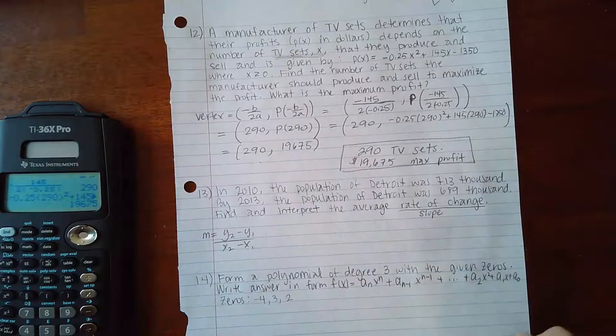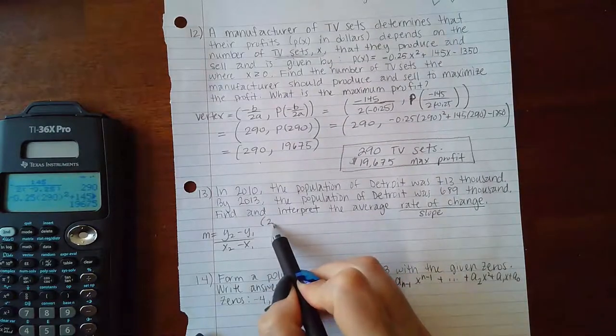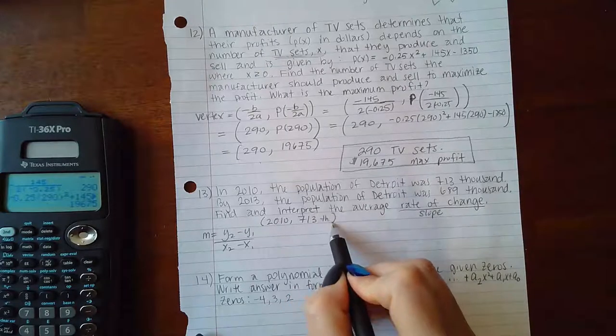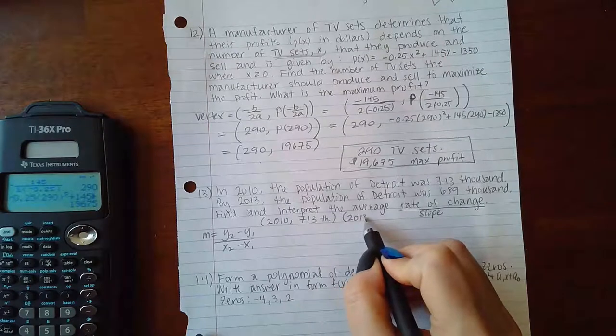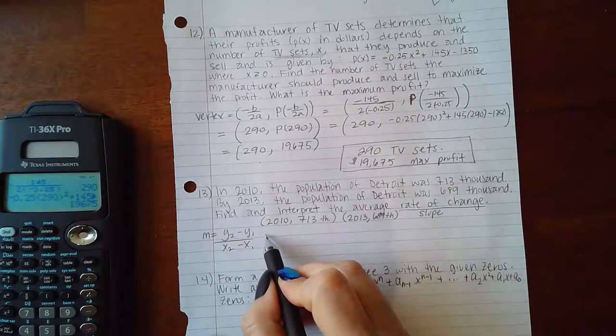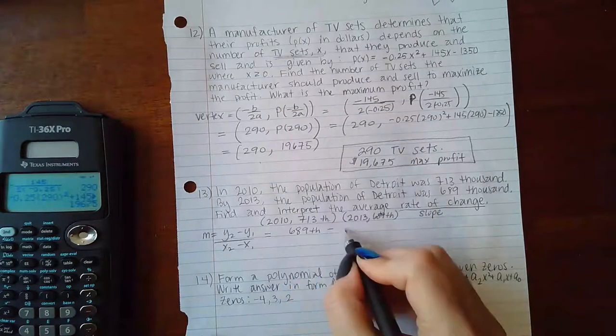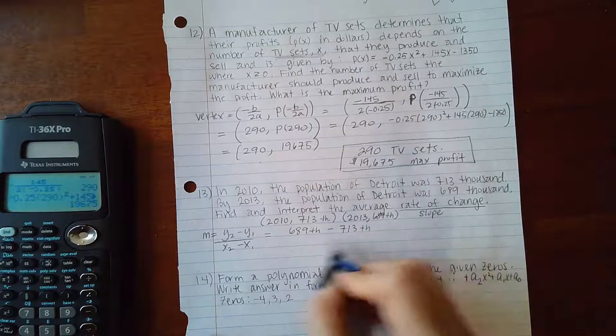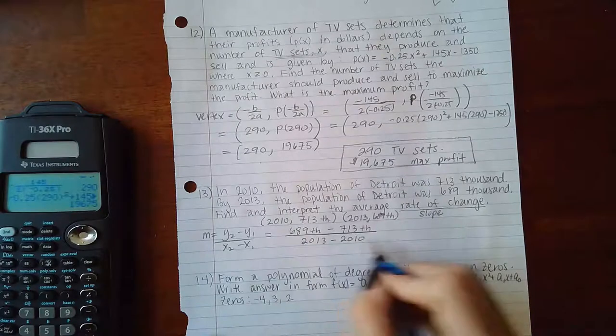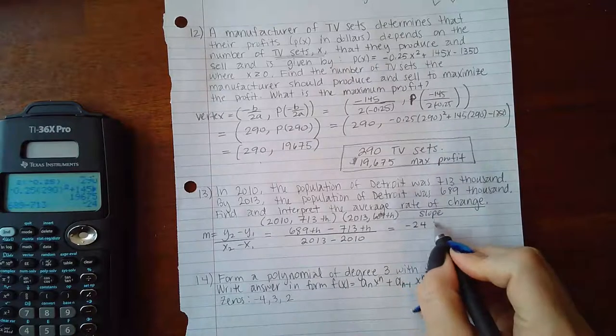In order to use that, I have to have my information in points. In 2010 we have 713,000, and in 2013 we have 689,000. The formula is the second y-coordinate minus the first y-coordinate over the second x-value minus the first x-value. So 689,000 minus 713,000 is negative 24,000.